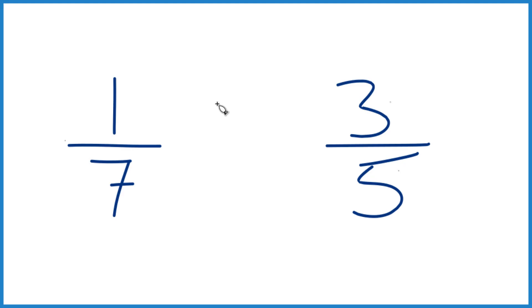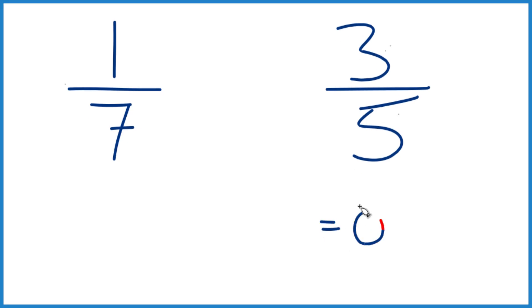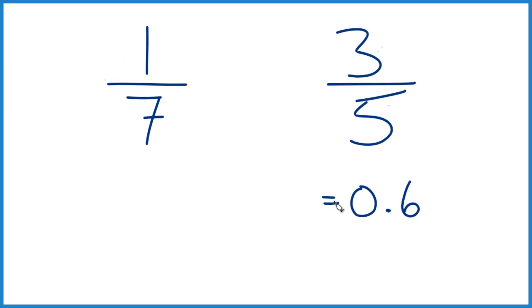You could just take and divide 1 by 7 and then 3 by 5 in a calculator. 3 divided by 5, that equals 0.6, and that's it, it ends. So this is definitely terminating.